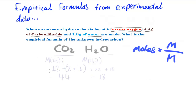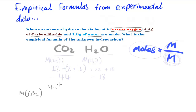So the molar mass of H2O is 18 and the molar mass of CO2 is 44. We can now use these in the equation to find the number of moles. The moles of CO2 equals 4.4 grams divided by 44, which gives us 0.1 moles of CO2.